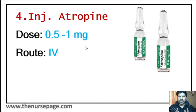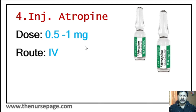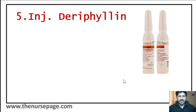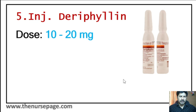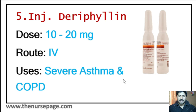Fourth medicine is injection atropine. Dose is 0.5 to 1 milligram. Main route of administration is intravenous. It is also used topically for dilation of the pupil and in endotracheal administration, but commonly given intravenously. Main indications are bradycardia and cardiac arrest.